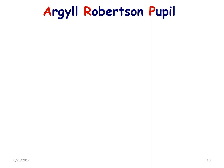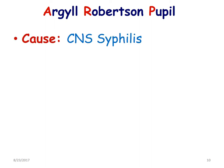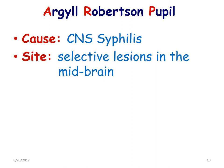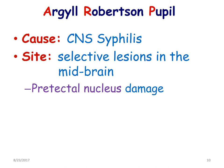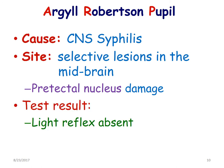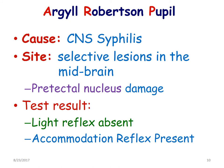Next, we need to know what is Argyll Robertson pupil. This is caused by syphilis of the central nervous system. There will be selective lesions in the midbrain, particularly the pre-tectal nucleus will be damaged. When one does the pupillary light reflex test, we find that the light reflex will be absent, but you will have constriction of the pupil in the accommodation reflex. Therefore, we say accommodation reflex will be present, but light reflex will be absent.